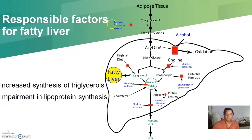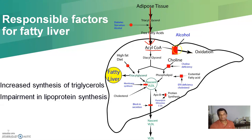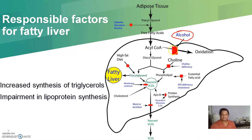In cases of diabetes mellitus, starvation, and alcohol consumption, adipose tissue releases free fatty acids, which are converted to acyl-CoA, enter the mitochondria, and undergo beta oxidation. However, when alcohol is consumed, NAD is consumed by alcohol metabolism and this beta oxidation process is impaired. As a result, acetyl-CoA is instead converted to diacylglycerol, then to triacylglycerol, forming fat or lipid that is stored in the liver as fatty liver.